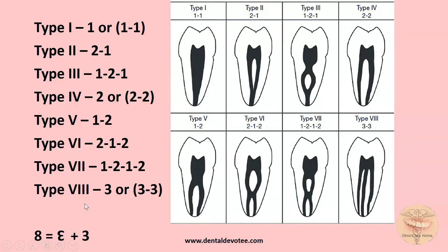For the remaining types, after Type 1 there are two-numbered configurations and three-numbered ones. The pattern alternates: after 1 there is always 2, and after 2 there is always 1 in the configurations — 2-1, 2-1-2, 1-2, 1-2-1-2. This alternating 1-2-1-2 pattern makes it easy to remember all remaining types.